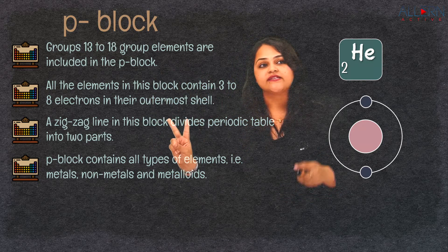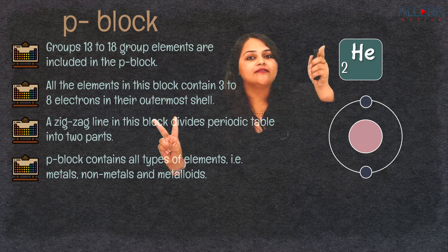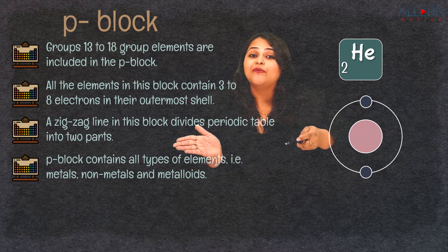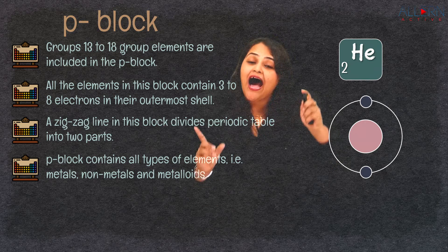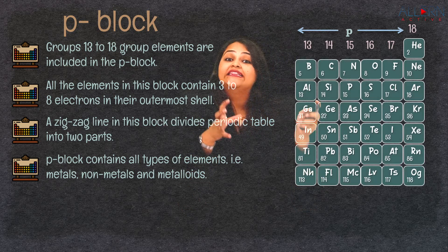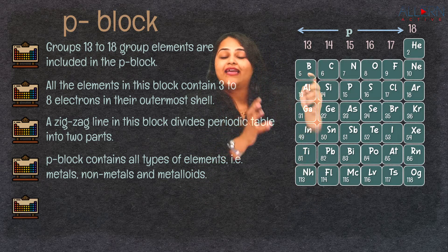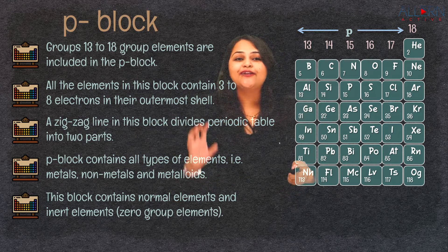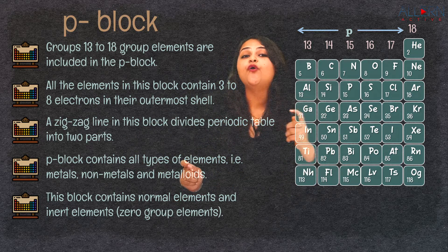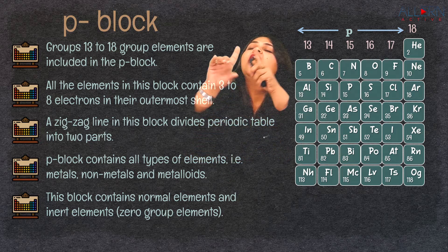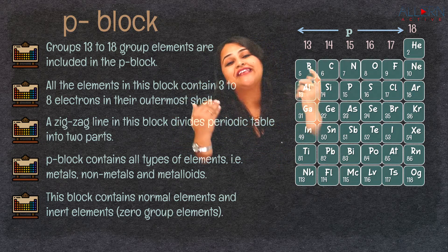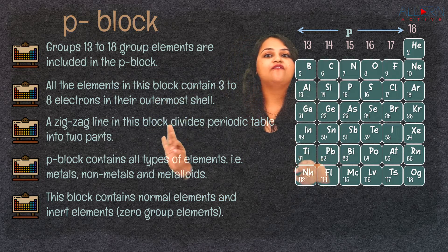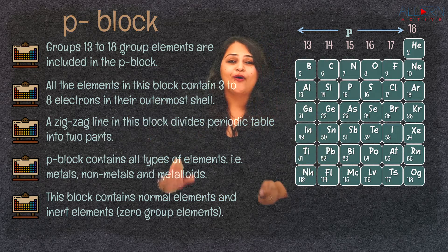So we have the duplet state (two electrons) and the octet state (eight electrons in the outermost orbit). Because these noble gas elements are stable, they form the inert elements or noble gases. This group is also called the zero group, because there are zero reactions that they perform and they have no unfulfilled shells — their orbits are completely fulfilled.